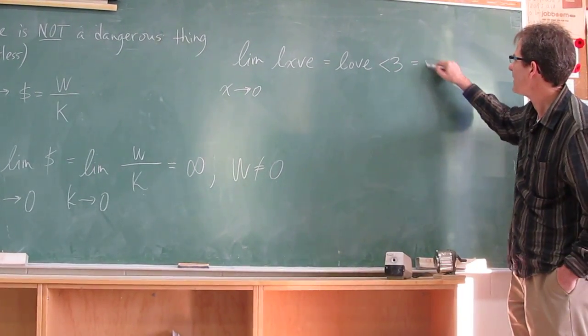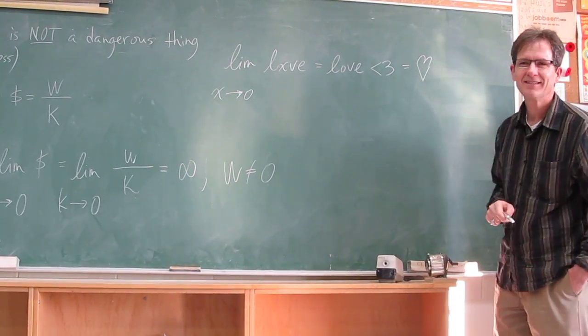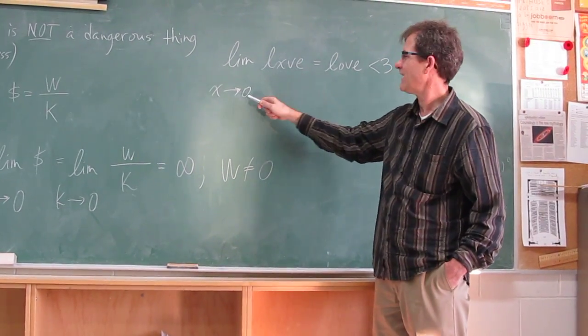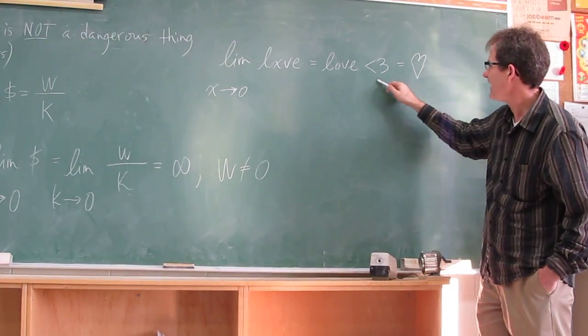All right? Because that's a heart, all right? So the limit of x, v, e as x approaches zero is less than three.